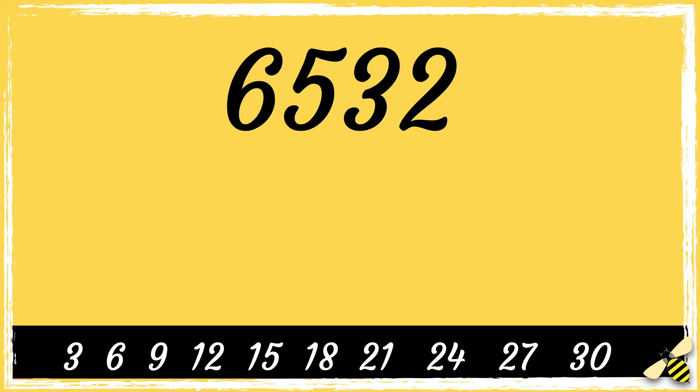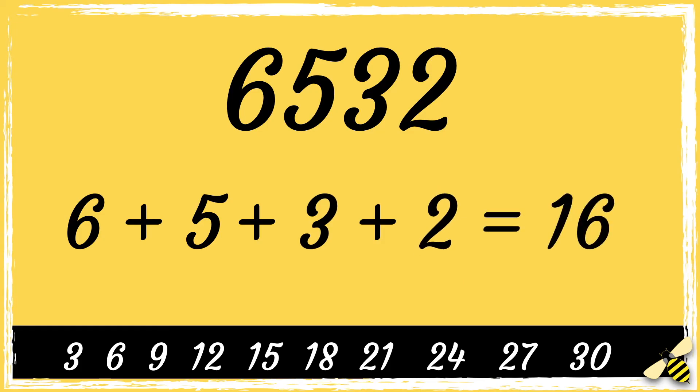Here's another one. 6532. So first we add the digits. 6 add 5 add 3 add 2 equals 16. 16 is not a multiple of 3.